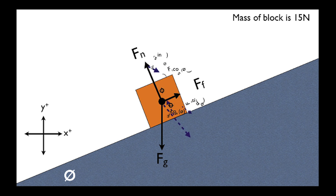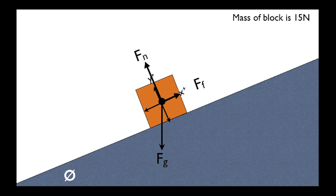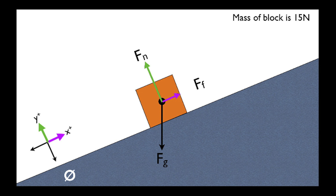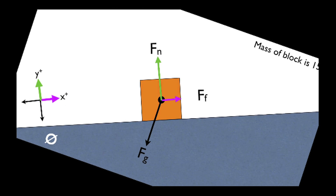So instead of fighting with all those angles, I thought: why not just pick a coordinate system where the normal force and the force of friction were the x and y directions? After all, those two forces are perpendicular to each other. It's just like looking at it in terms of rotating the page of the paper as if there wasn't a slope at all.